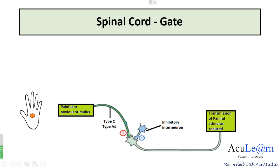There are opioid receptors on the terminals of the first order neuron and the dendrites of the second order neuron. In the first order neuron, when the opioid peptides bind to the opioid receptors, they decrease the calcium influx, which causes decreased release of the neurotransmitters glutamate and substance P.